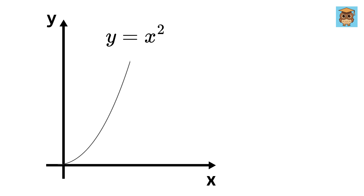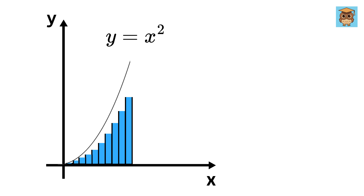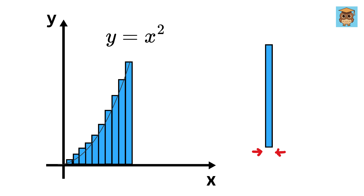Imagine slicing this parabola into very thin vertical slices, almost like we are stacking pieces of paper next to each other. Each of these slices has a tiny width, and each slice is so thin that it looks like a rectangle.